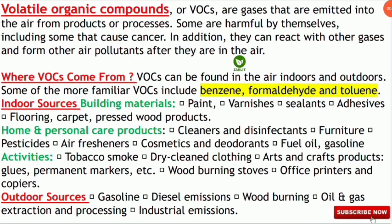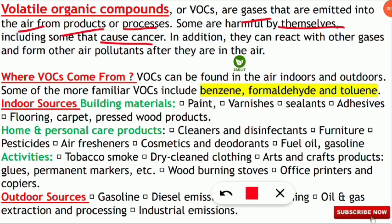Let's read about volatile organic compound characteristics. VOCs are gases emitted into the atmosphere from products or processes. Some are harmful by themselves, including some that cause cancer. VOCs can also react with other gases to form additional air pollutants. VOCs can be found both indoors and outdoors. The most important and familiar VOCs include benzene, formaldehyde, and toluene.